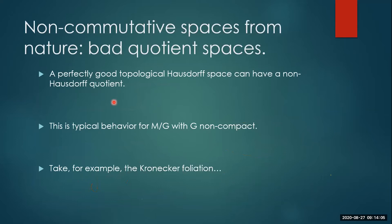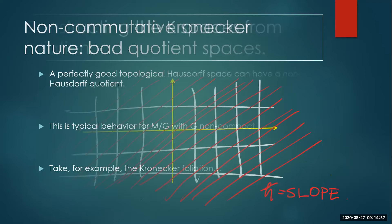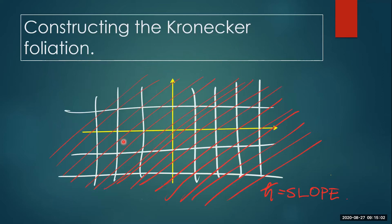As a geometer, where do non-commutative spaces come from? Often they come from bad quotient spaces. A perfectly good Hausdorff topological space can have a non-Hausdorff quotient; a perfectly good manifold acted on by a group can have a quotient that is not a manifold. This is typical behavior when the group acting is non-compact.